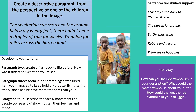Your task then is to have a go at writing a descriptive paragraph from the perspective of one of the children in the image. You've got a model in front of you and I actually want you to extend it from a paragraph to an extended piece of writing. The model says: 'The sweltering sun scorched the ground below my weary feet. There hadn't been a droplet of rain for weeks, trudging for miles across the barren land.' You can continue from that. I've put some key structural ideas for developing your writing — what you could include in your upcoming paragraphs two, three and four.